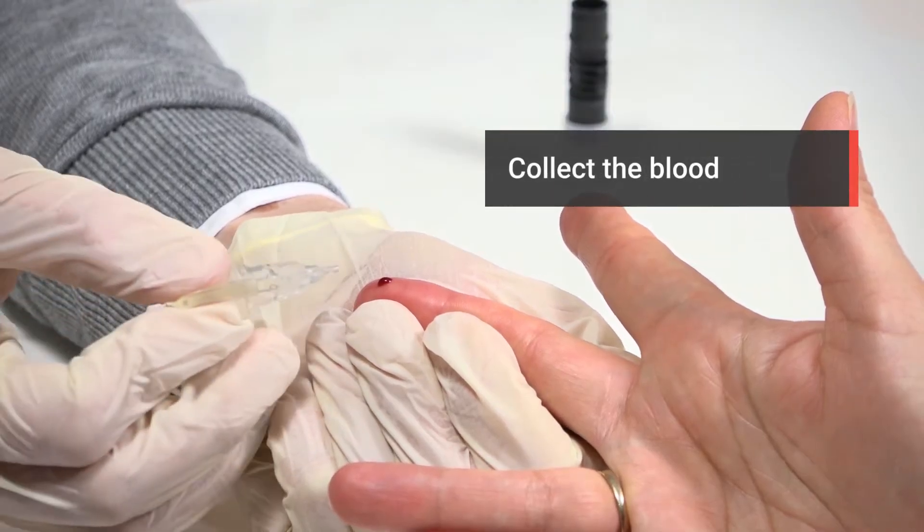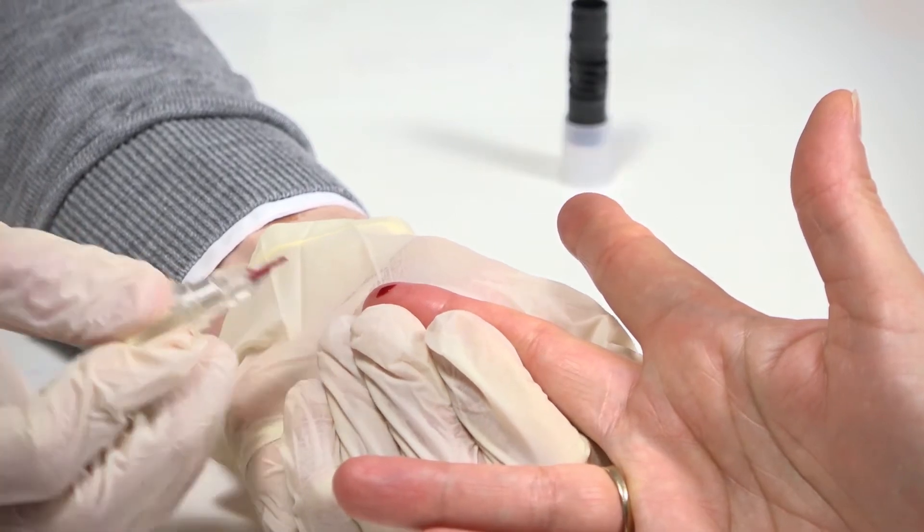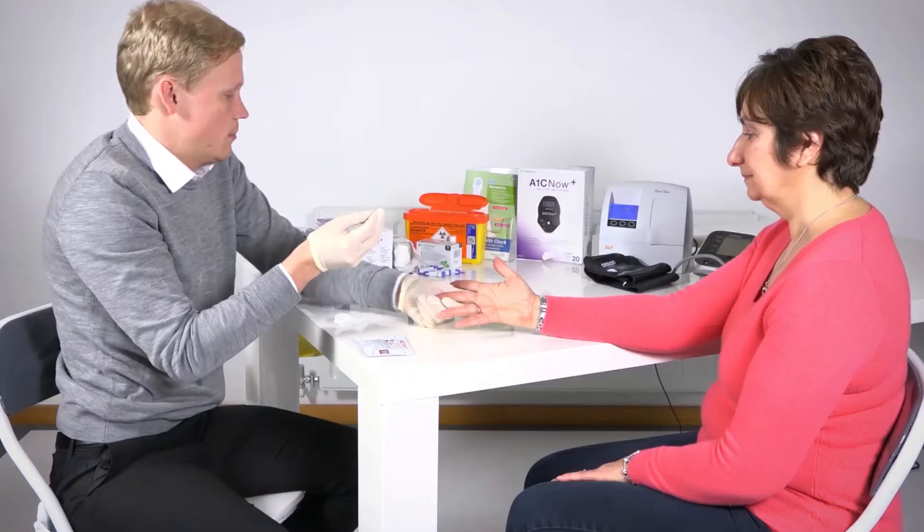Collect the blood by touching the tip of the blood collector into the blood drop. Do not smudge the blood or try to scoop the blood up. Give some gauze to the patient and ask them to firmly apply pressure to stop the bleeding.